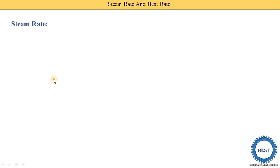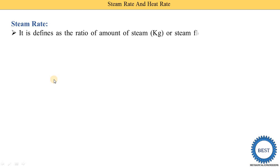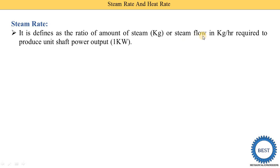Steam rate is defined as the amount of steam flow required to produce unit power output. Unit power output means 1 kilowatt. Amount of steam means it is a mass of steam.